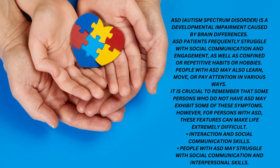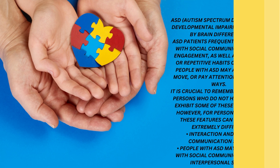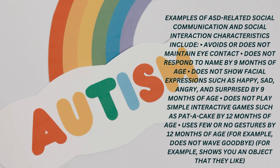People with ASD may struggle with social communication and interpersonal skills. Examples of ASD-related characteristics include: avoids or does not maintain eye contact; does not respond to name by 9 months of age; does not show facial expressions such as happy, sad, angry, and surprised by 9 months of age; does not play simple interactive games such as pat-a-cake by 12 months of age; uses few or no gestures by 12 months of age.